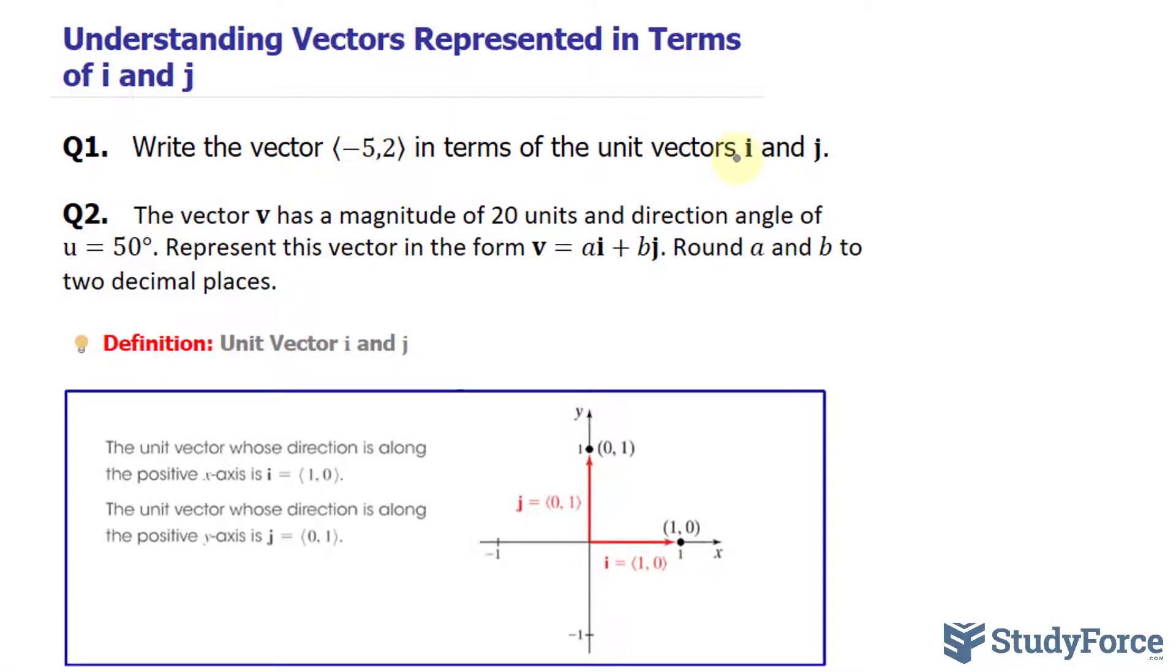I want to start off by mentioning that i and j are vectors that have the following configuration. i has the components of (1,0), and j has the components (0,1).